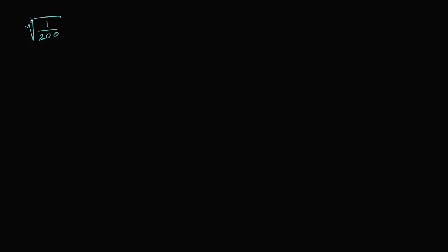We have the principal square root of 1/200, and what I want to do is simplify this. When I say simplified, I mean if there are any perfect squares I can factor out to take them out from under the radical. I encourage you to pause the video and see if you can do that.